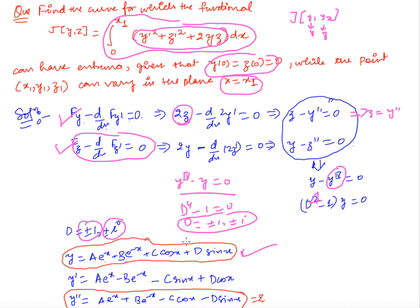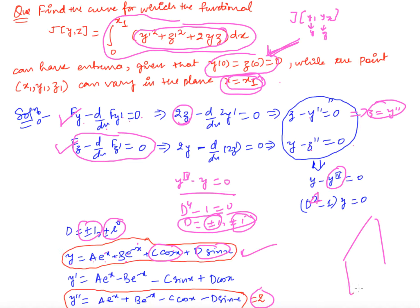When D = ±1, the solution is ae^x + be^{−x}, and when D = ±i, the solution is c cos x + d sin x. So the general solution is y = ae^x + be^{−x} + c cos x + d sin x, and since z = y'', we differentiate twice to get z. We now need to find the constants a, b, c, d using the boundary conditions.